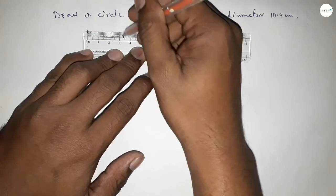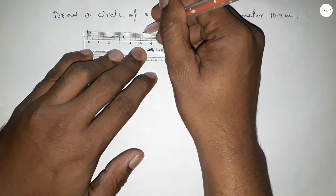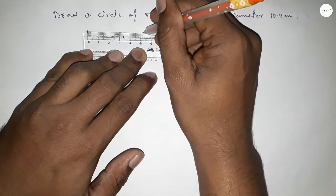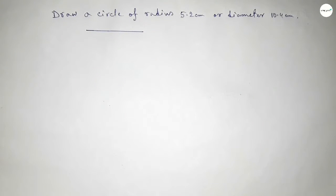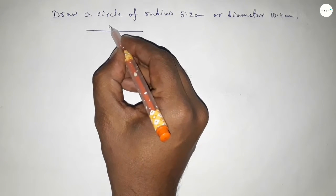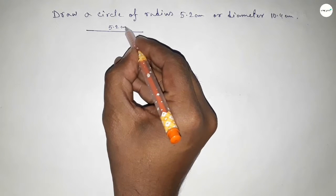Starting from zero, one, two, three, four, five, and this is five point one, two. We know that the radius of a circle is half of the diameter, so this is 5.2 centimeters.